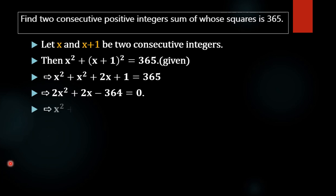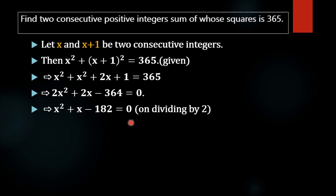Dividing by 2, we get the quadratic equation: x squared plus x minus 192 equals 0.